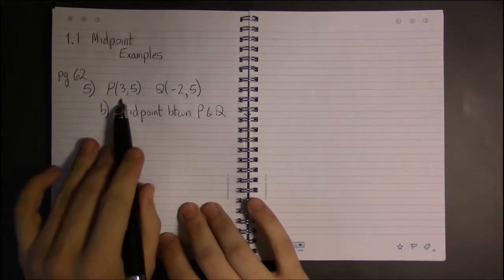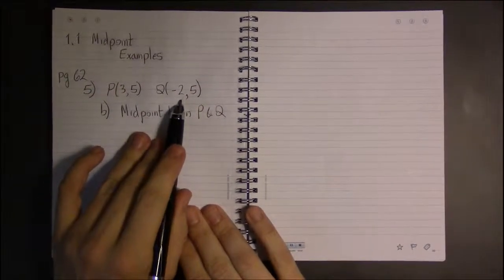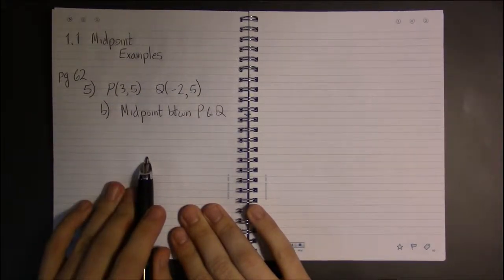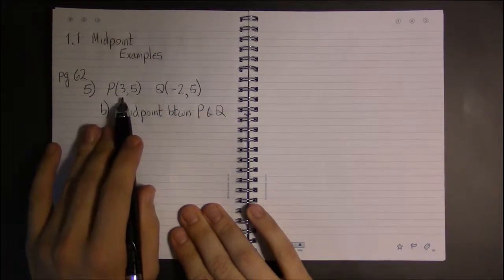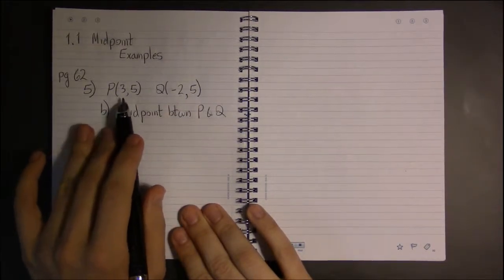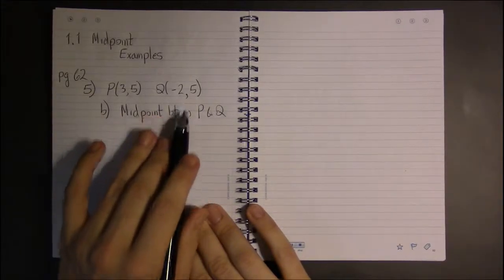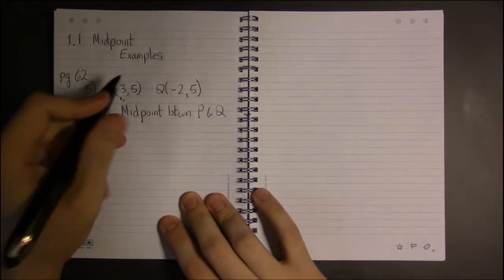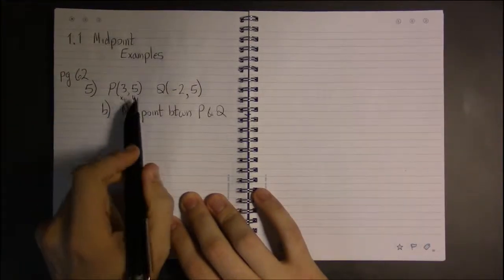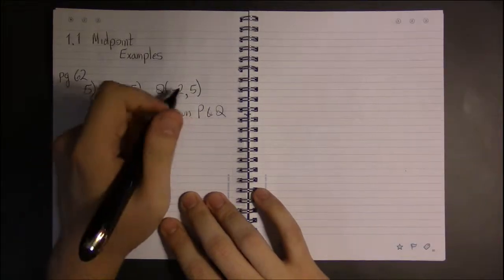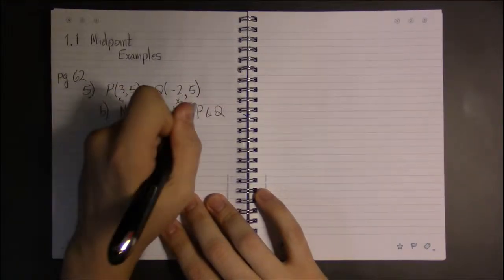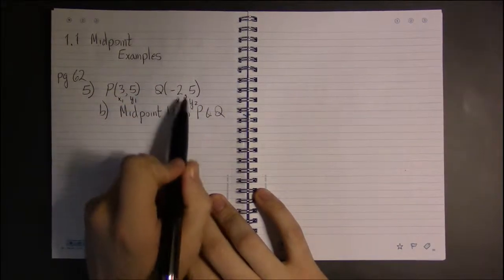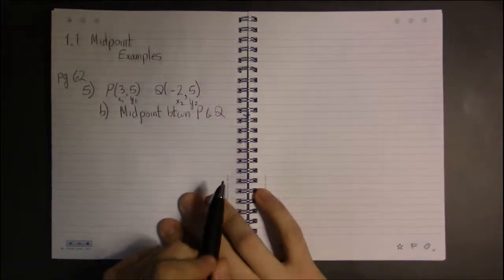Part B of this problem asks us to compute the midpoint between P and Q. Once again, we've got x1s, x2s, y1s, and y2s to deal with. It doesn't matter which gets to be x1 and which is x2, so long as y1 goes with x1 and y2 goes with x2. So if we have P be x1, then that makes 5 y1. And so Q is forced to be x2, y2, minus 2 being x2 and 5 being y2.